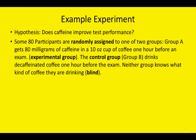Let's pretend that some 80 participants are randomly assigned to one of two groups. Group A gets 80 mg of caffeine in a 10-ounce cup of coffee one hour before the exam. We're going to call them the experimental group.